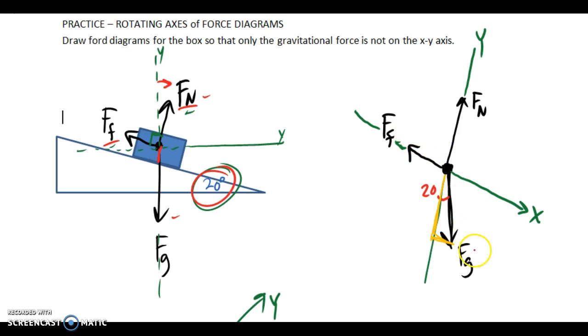Now the gravitational force will be off axis but it's only one and calculating the components for that is easier than if it were two. So that's what we do and you have to get used to doing that.